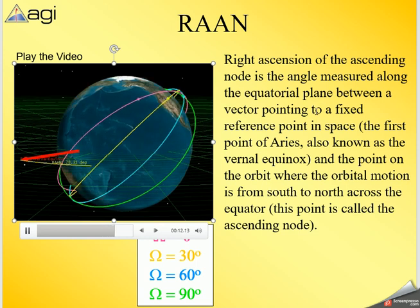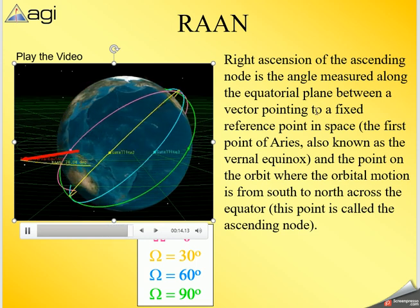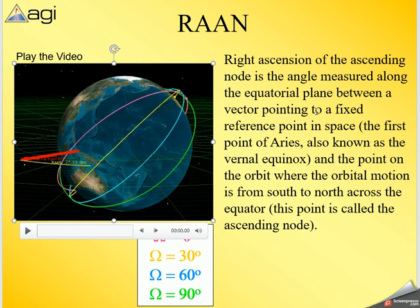Right Ascension of the Ascending Node is the angle measured along the equatorial plane between the vector pointing to a fixed reference point in space — the First Point of Aries, also known as the vernal equinox — and the point in the orbit where the satellite crosses the equator moving south to north, called the ascending node. This reference always points to the same spot in space while the Earth rotates underneath.